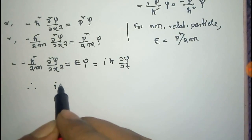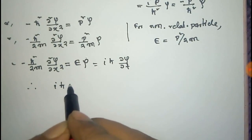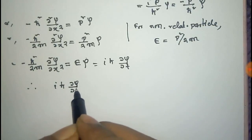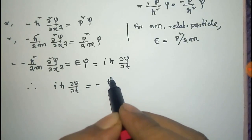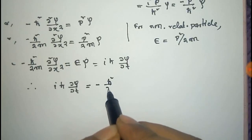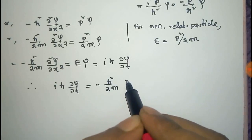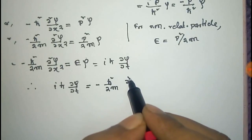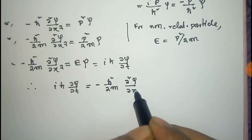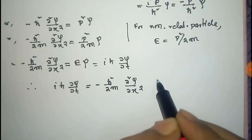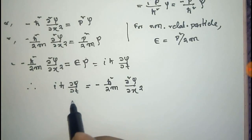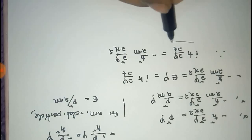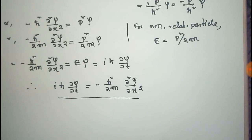Substituting this value, we get: iℏ · ∂ψ/∂t = −ℏ²/2m · ∂²ψ/∂x². And that is the well-known time-dependent one-dimensional Schrödinger wave equation. Thank you.